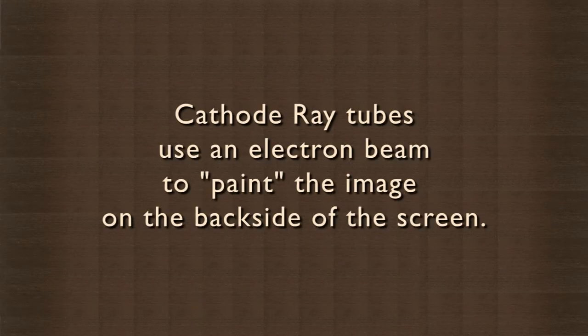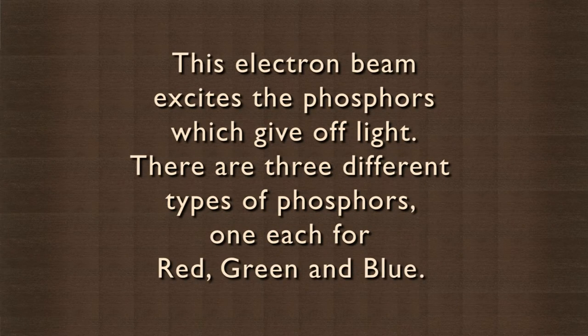Cathode ray tubes use an electron beam to paint the image on the back side of the screen. This electron beam excites the phosphors which give off light. There are three different types of phosphors,